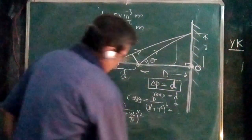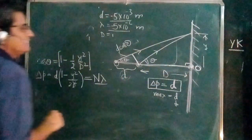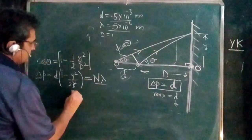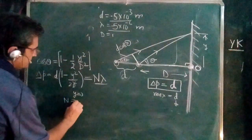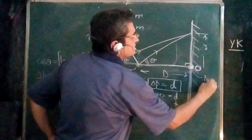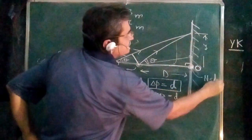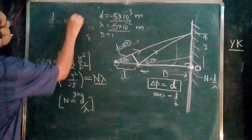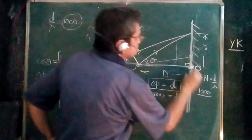An important point: this n is not the same as the normal nth order in Young's double slit experiment. When y = 0, n equals D/λ. Calculating D/λ: (0.5×10⁻³)/(0.5×10⁻⁶) = 1000. So at y = 0, the bright fringe corresponds to order n = 1000.